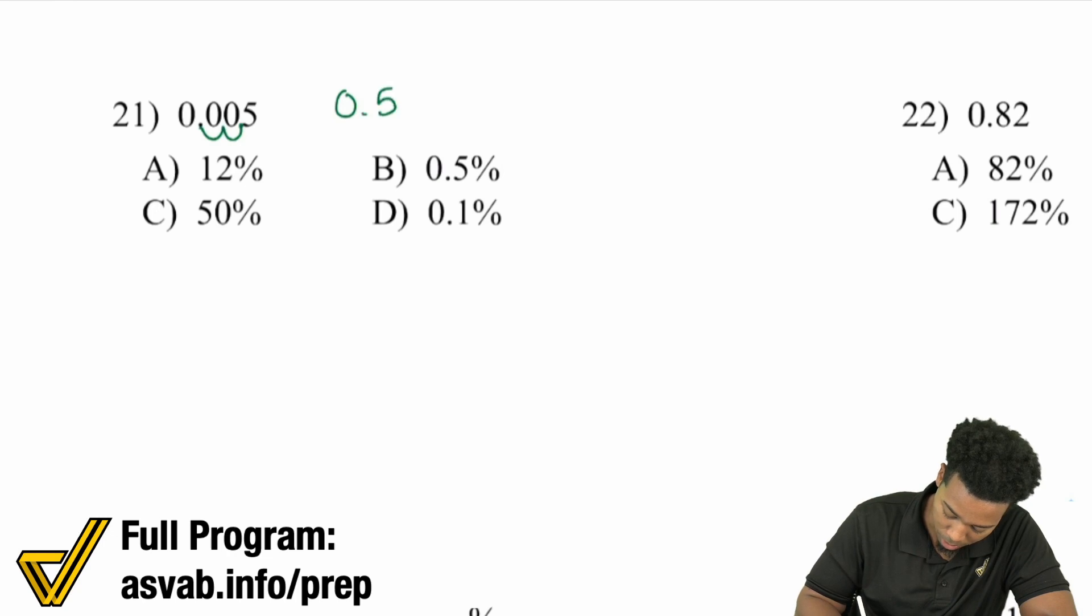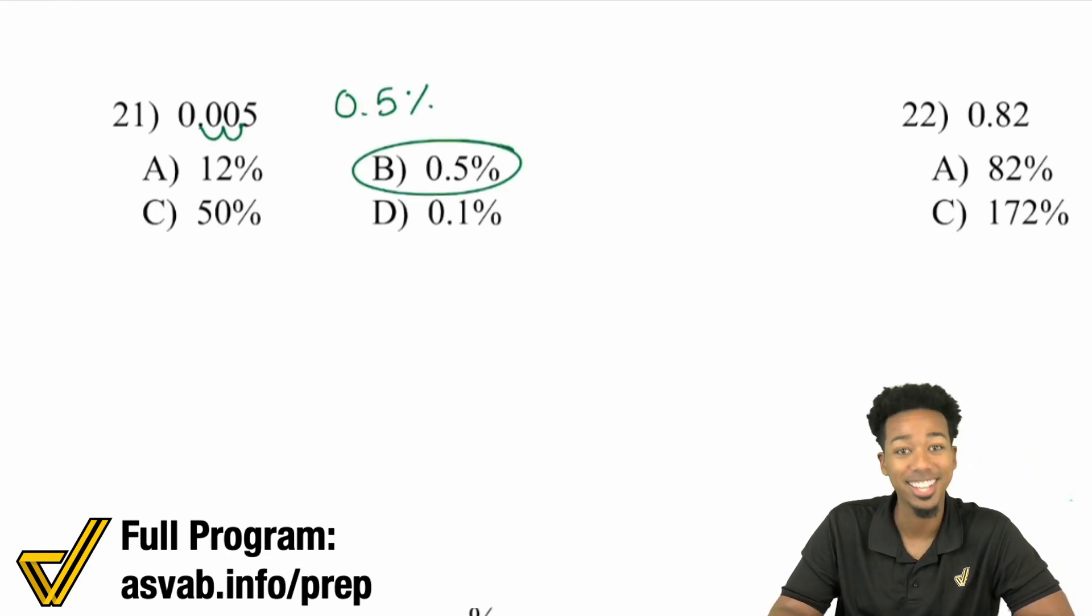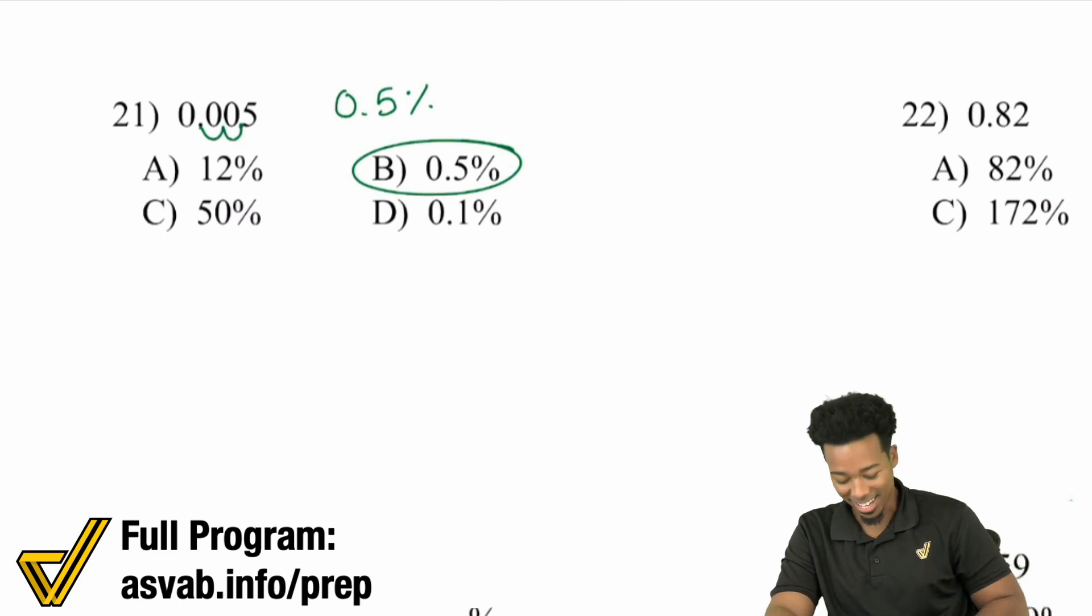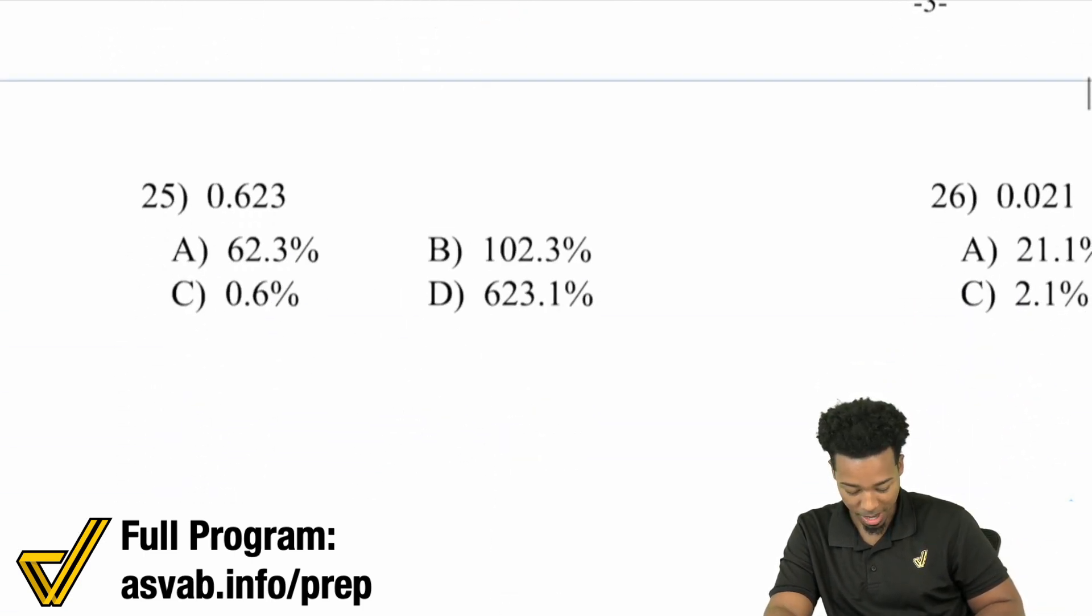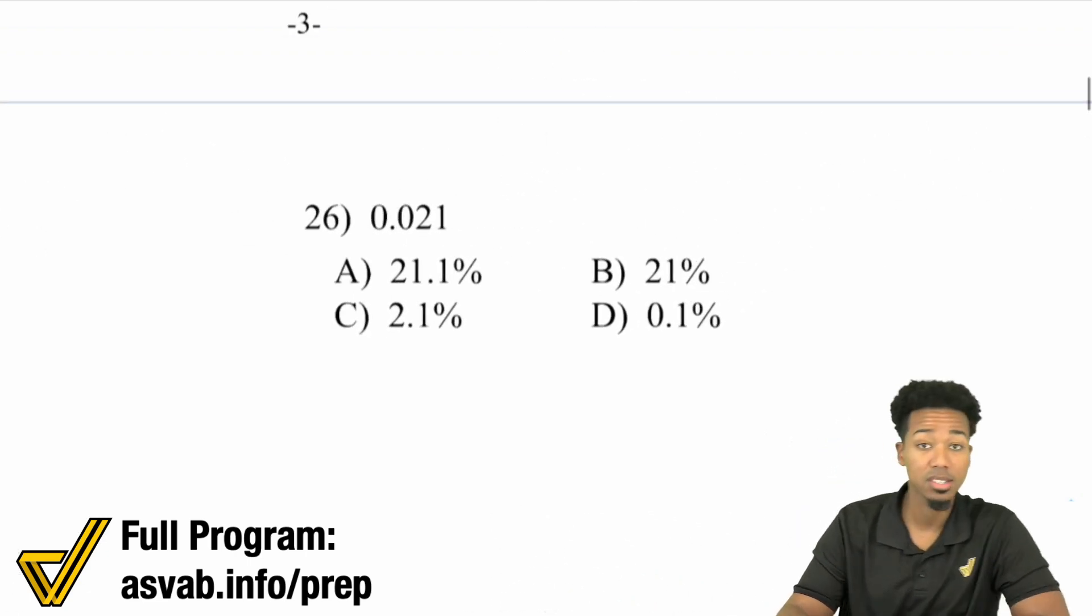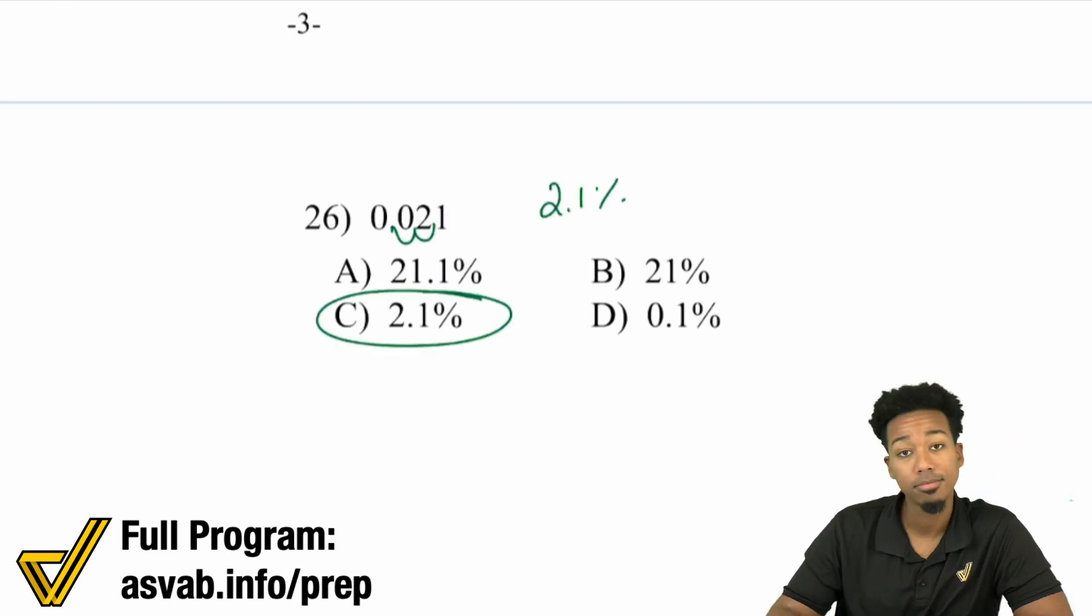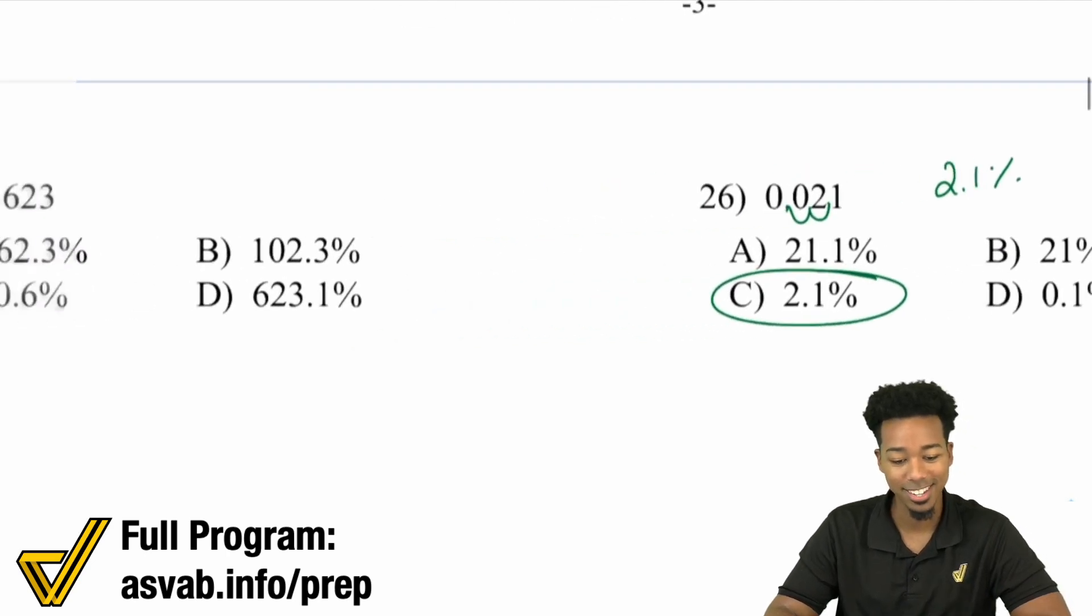You have yourself 0.5%. Right there. That is really it. My Math Quarter people. Going into another one here that may look complicated. Let's see. Let's say we're looking at over here, number 26. Again, move the decimal place over to the right two times. One, two, 2.1%. That's C. That's it. That's seriously it, my Math Quarter people.